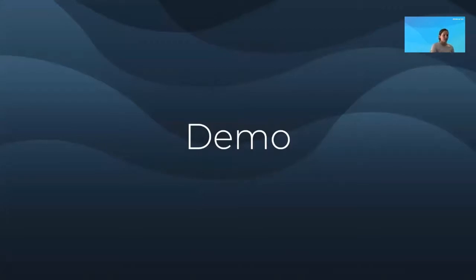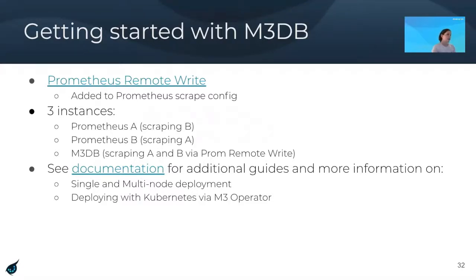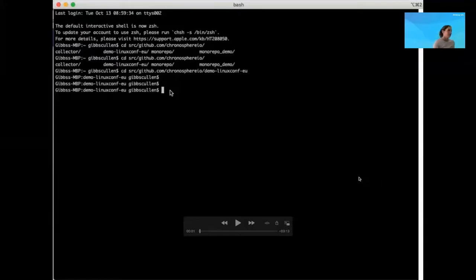Now we're going to get into a quick demo of getting started with M3 and M3DB. A couple things to note before switching to the demo: we will show the remote write configuration. I already have three instances up and running for the purposes of time — two Prometheus instances and one instance of M3DB. Make sure to check out our documentation around M3, as there are other ways of deploying M3 as well. This is a pre-recorded demo, so I'll just talk through the different stages.